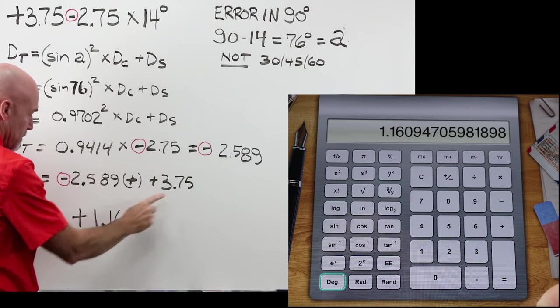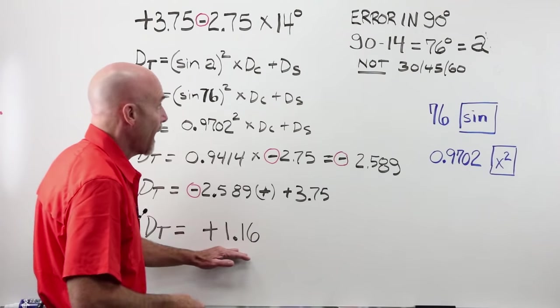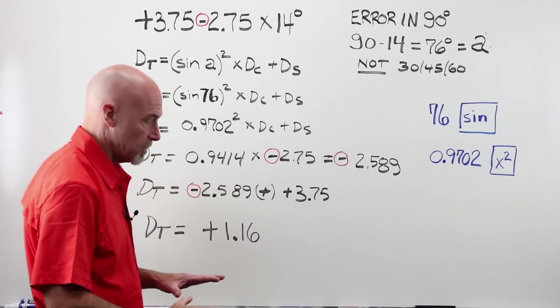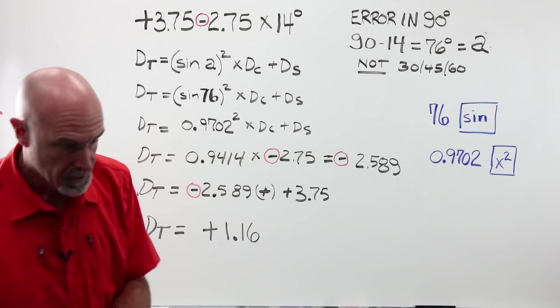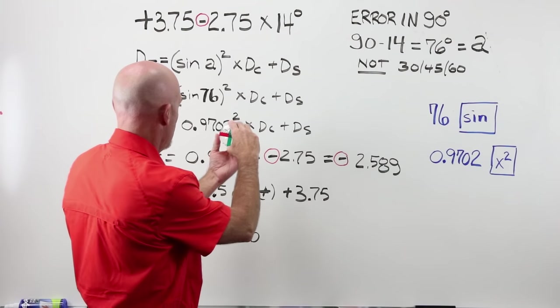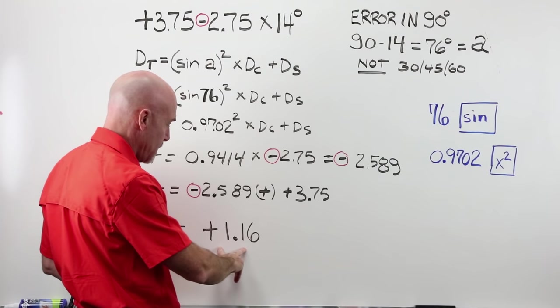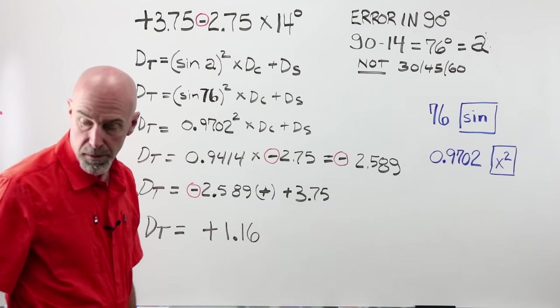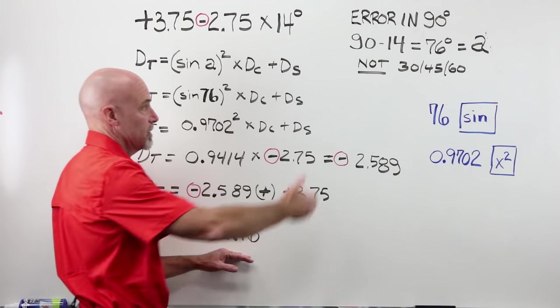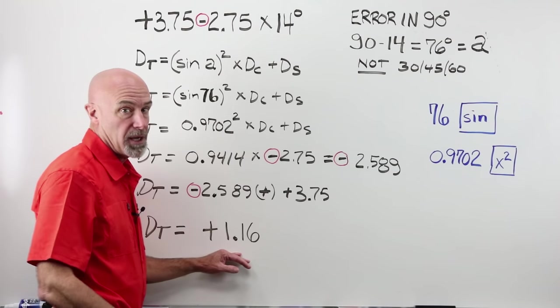Now I can do my minus 2.589 plus my 3.75 sphere. Here, when I add those two together, I end up with a plus 1.16. At 90 degrees, in this particular prescription, the way this particular lens is laid out with my strongest power, way down at 14, at 90 degrees, I've got plus 1.16. Once I have this, I can solve for my error in 90 and determine how much prism was created by the error.